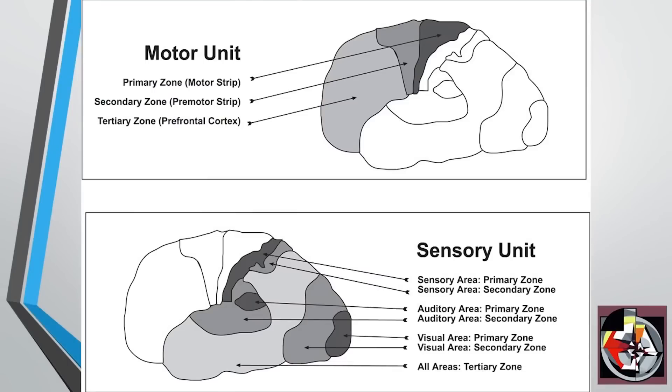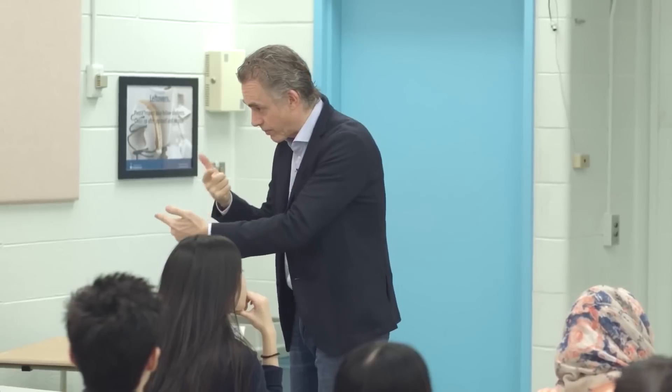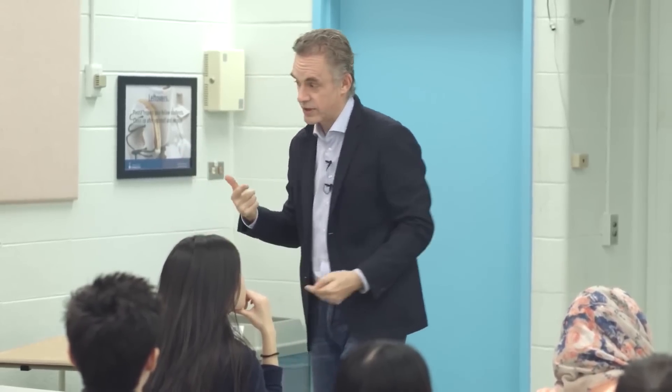You can look at the brain from front to back and divide it roughly into two sections: one has to do with sensory processing — roughly the back half — and one has to do with motor output. Those things aren't as clearly differentiated as you might think, because there's very little sensation without motor output. Even smell requires you to breathe in, and an animal tracking a scent is constantly using motor output to modify the sensory stream.